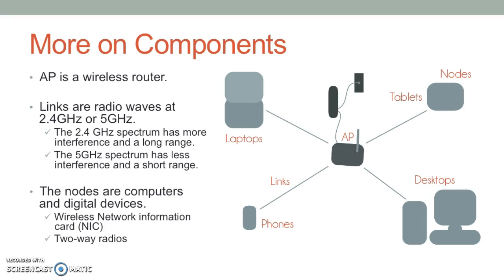The 2.4 GHz spectrum is shared with microwaves, baby monitors, garage door openers, and many other non-Wi-Fi devices. All of these devices can cause interference to the network, but 2.4 GHz has a long range compared to the 5 GHz spectrum. The 5 GHz spectrum is extremely less crowded, but it has a shorter range requiring multiple access points.